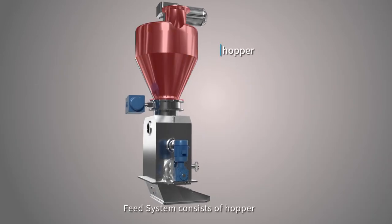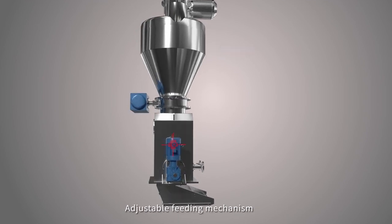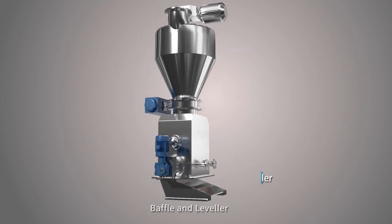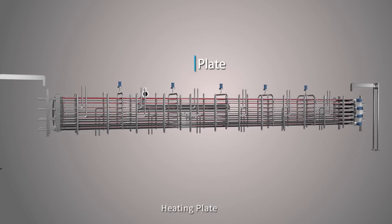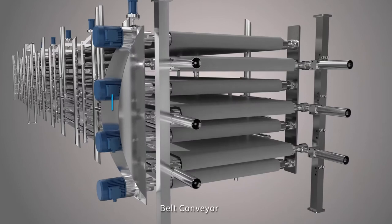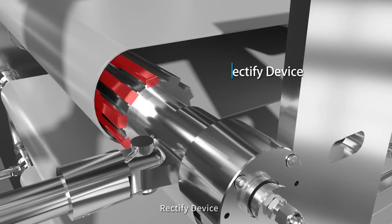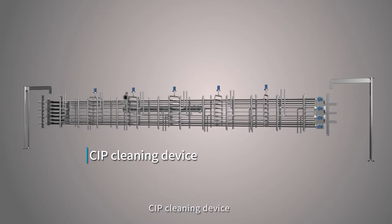Feed system consists of hopper, adjustable feeding mechanism, baffle, and leveler. The main body consists of pressure vessel, heating plate, belt conveyor, rectified device, and CIP cleaning device.